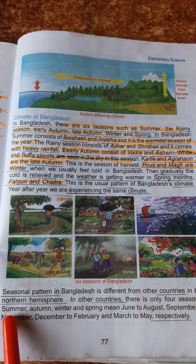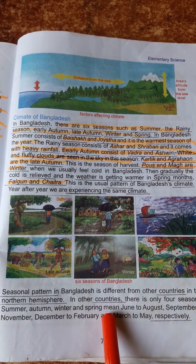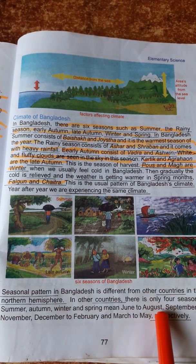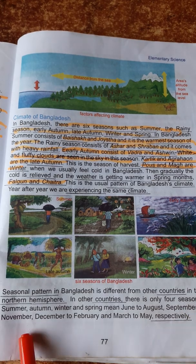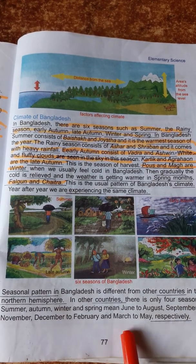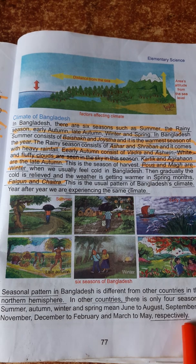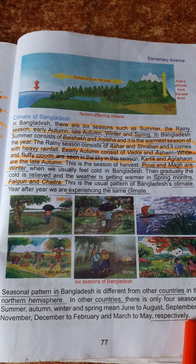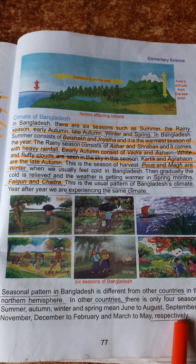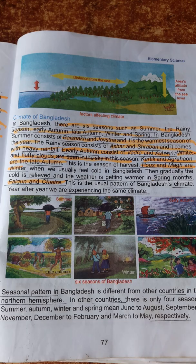In other countries there are only four seasons: summer, autumn, winter, and spring — meaning June to August, September to November, December to February, and March to May respectively. Onnanno deshthe matro chatti ritu royeche: June theke August porjonto krisho kaal, September theke November porjonto shorot kaal, December theke February porjonto shiit kaal, ebong March theke May maash porjonto boshonto kaal.